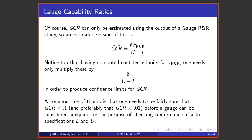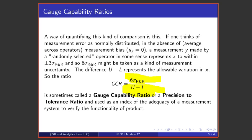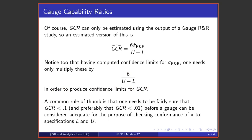Of course, you can only estimate a gauge capability ratio. This is a perfectly fine definition, but it's knowable only in theory because one can't know exactly what σ_R&R is. The best one can do is estimate the gauge capability ratio. So we put a hat over GCR: if I have an estimate of σ_R&R, I take six times that estimate and divide by the difference in engineering specifications, giving an estimated gauge capability ratio.